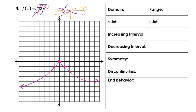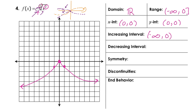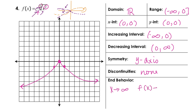Talking about our domain – the domain here is going to be all real numbers. Our range, the y values stay below the x-axis – that's going to be from negative infinity to 0. X and y intercepts are both at (0, 0). Increasing from negative infinity up to 0. Decreasing from 0 to infinity. We do have symmetry – this is symmetrical about the y-axis. No discontinuities. End behavior: as x approaches positive infinity, f(x) approaches negative infinity.